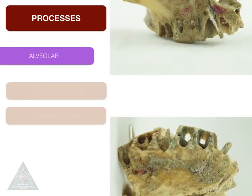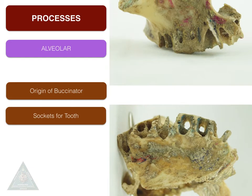Moving on to the alveolar process — the alveolar process is present laterally and inferiorly to the body. It is marked by the origin of buccinator over the molar teeth, and you can see the sockets for the tooth of the upper jaw — the upper row of teeth present in the alveolar process.